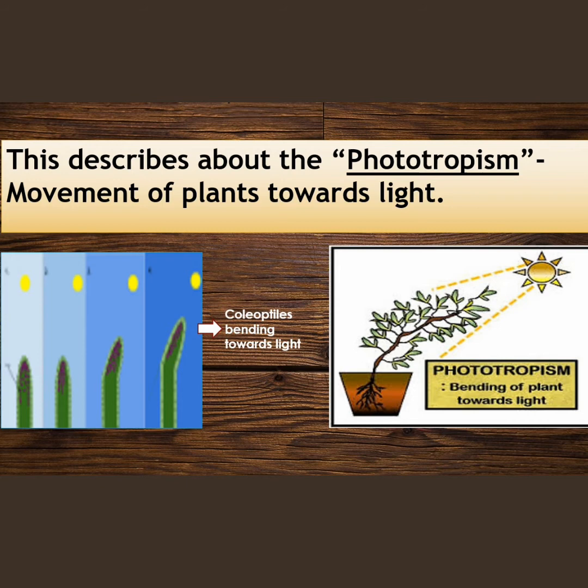What is phototropism? Phototropism is the bending or movement of the plant towards light.